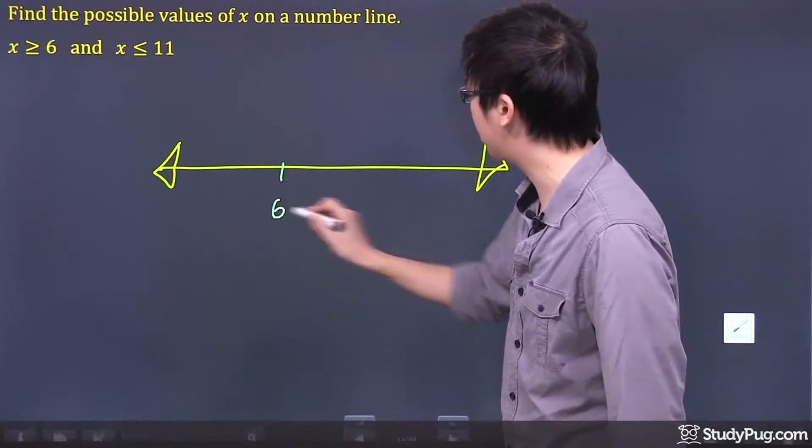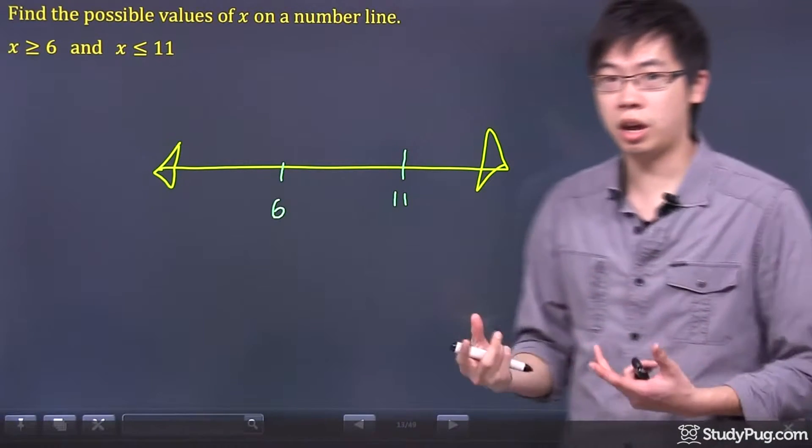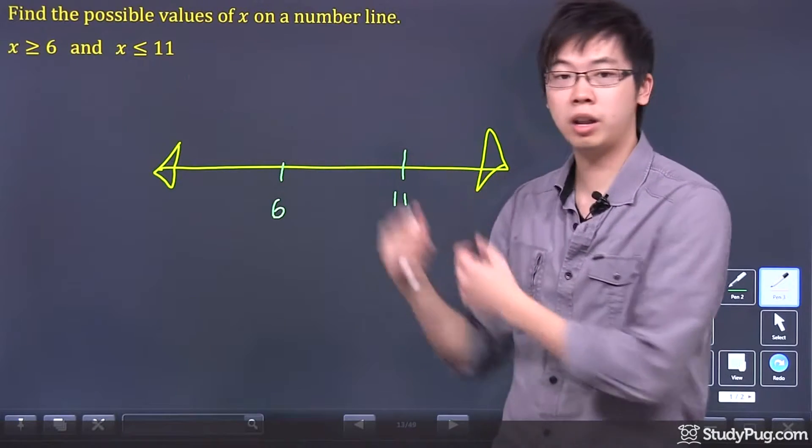What I would do is I'll put a 6 down here and I'll put an 11 down here, and then I just need to draw a line to represent that relationship there.